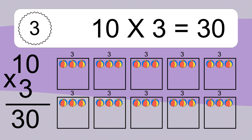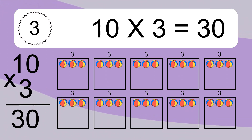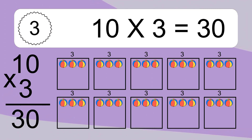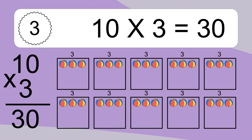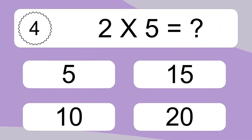10 times 3 equals what? We have 10 boxes, and each box has 3 colorful balls inside. If you count all the balls in all the boxes together, you will have 10 times 3 balls. This equals 30 balls.